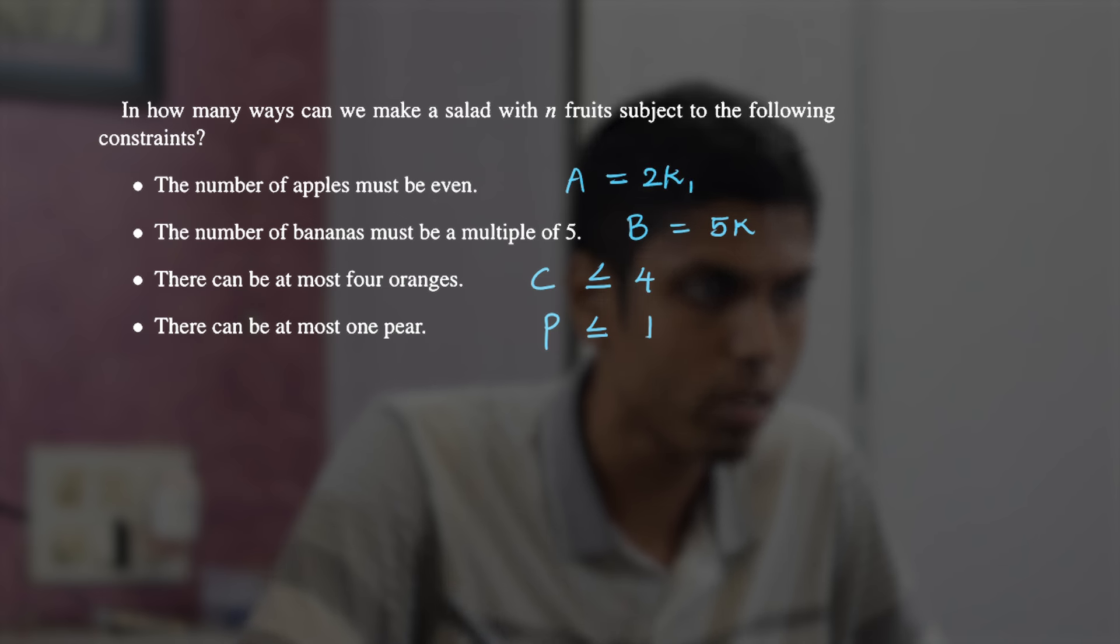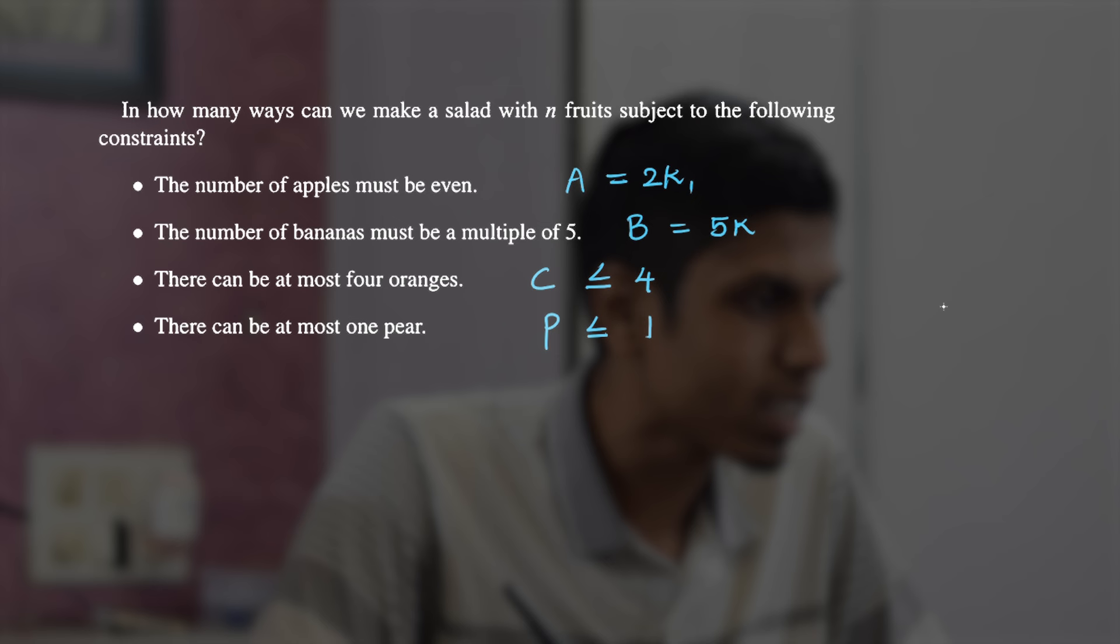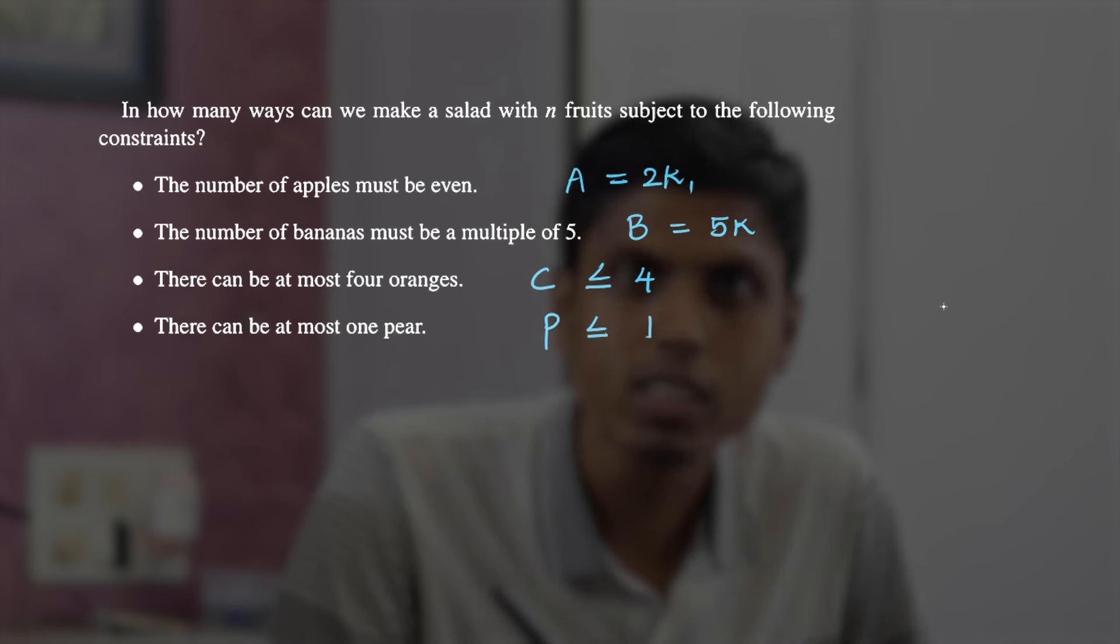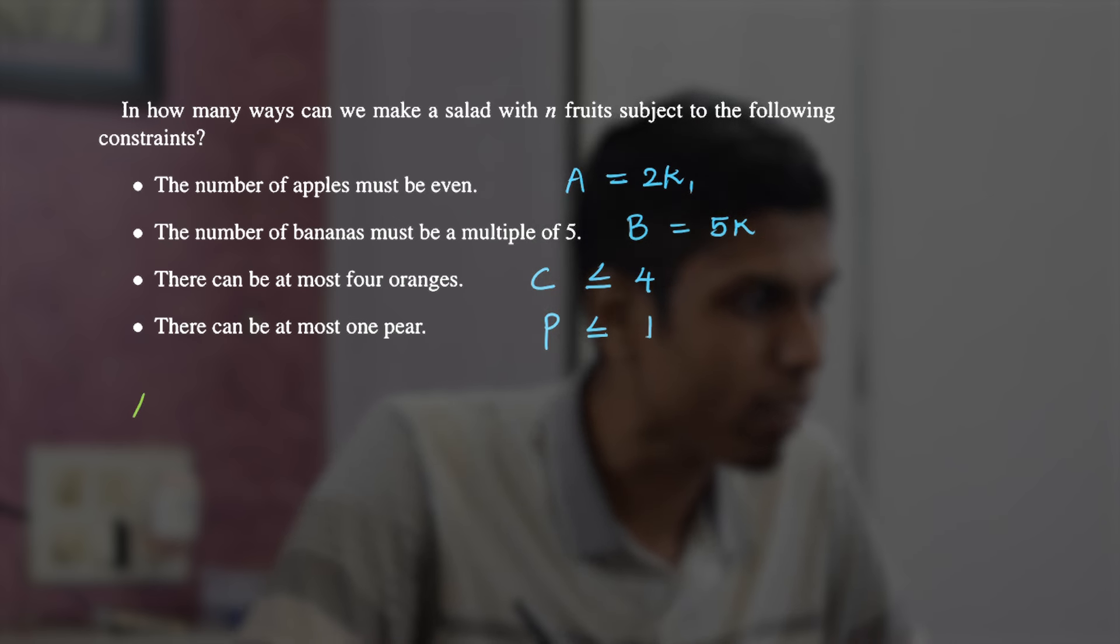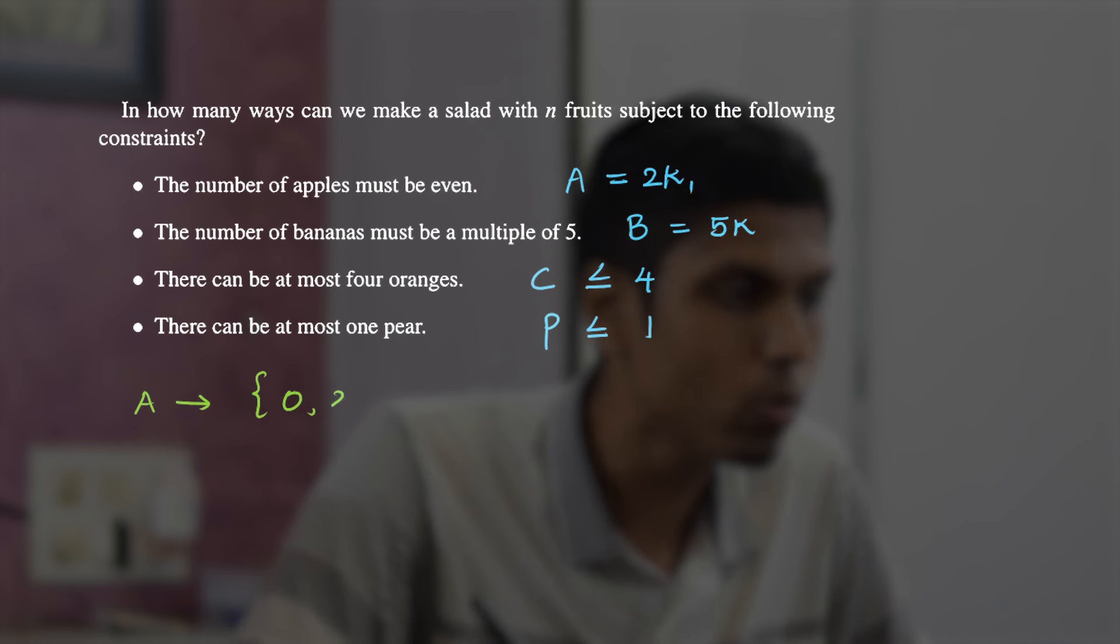And number of pears must be less than or equal to 1. So even can be written also as 2k, it's a multiple of 2. So these constraints might look complicated, so do not get intimidated because we are not going to do usual counting. Let's create some generating functions for these fruits.